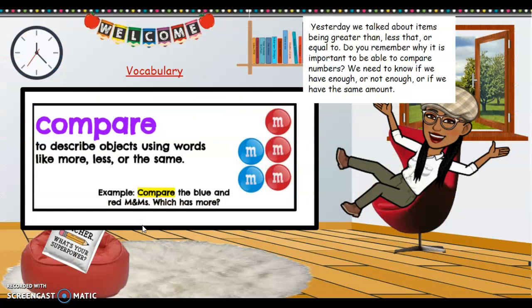Alright, so yesterday we talked about items being greater than, less than, or equal to. Do you remember why it's important to be able to compare numbers? Well, it's important because we need to know if we have enough or not enough, or if we have the same amount. And remember, compare means to describe objects using words like more, less, or the same.